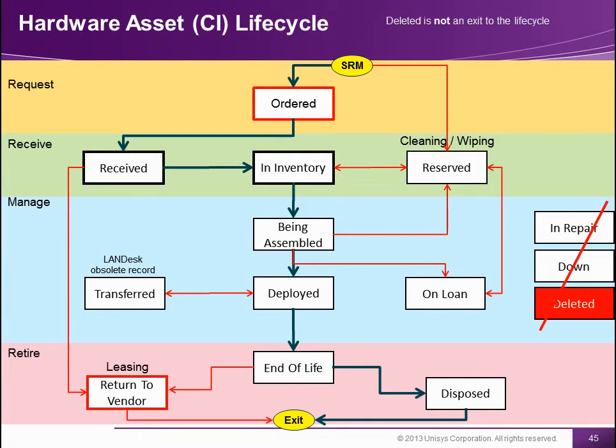What is a normal flow of information? We start from ordered, but we receive, eventually being assembled, deployed, end of life. In some cases, you can reserve things. In some cases, you can loan things.